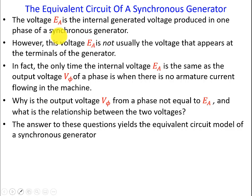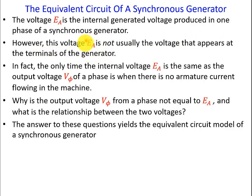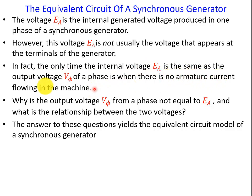The voltage EA is the internal generated voltage produced in one phase of a synchronous generator. However, this voltage EA is not usually the voltage that appears at the terminals of the generator. In fact, the only time the internal voltage EA is the same as the output voltage V_phase is when there is no armature current flowing in the machine.